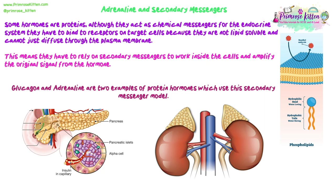This means they have to bind to a receptor on the outside of the cell membrane and rely on secondary messengers to amplify the original signal and cause change within the cell. We're going to look at two hormones: glucagon, released by the alpha cells in the islets of Langerhans in the pancreas; and adrenaline, secreted by the adrenal glands found on top of your kidneys. You've probably come across adrenaline before at GCSE, looking at the fight-or-flight response or its ability to increase heart rate. Today we look at it in the context of managing blood glucose levels.